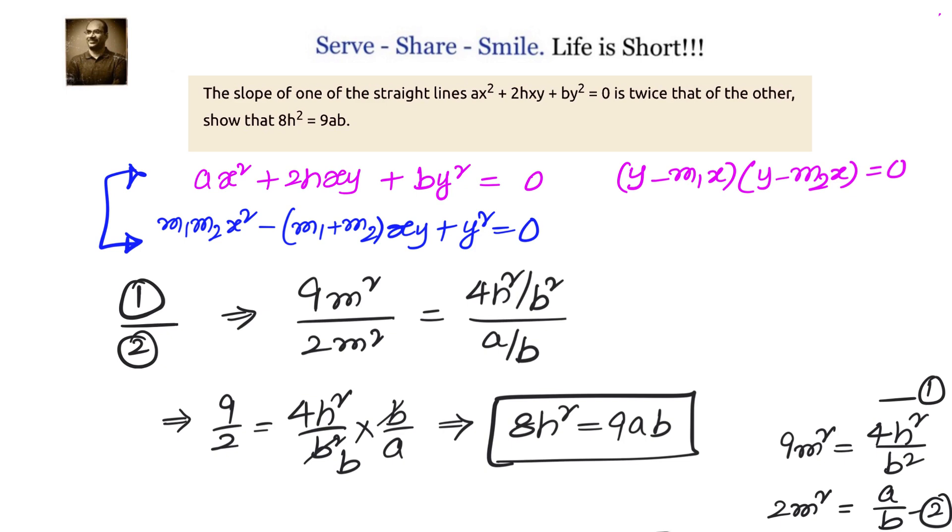So if the slope of one of the straight lines AX² + 2HXY + BY² = 0 is twice that of the other, then 8H² = 9AB.